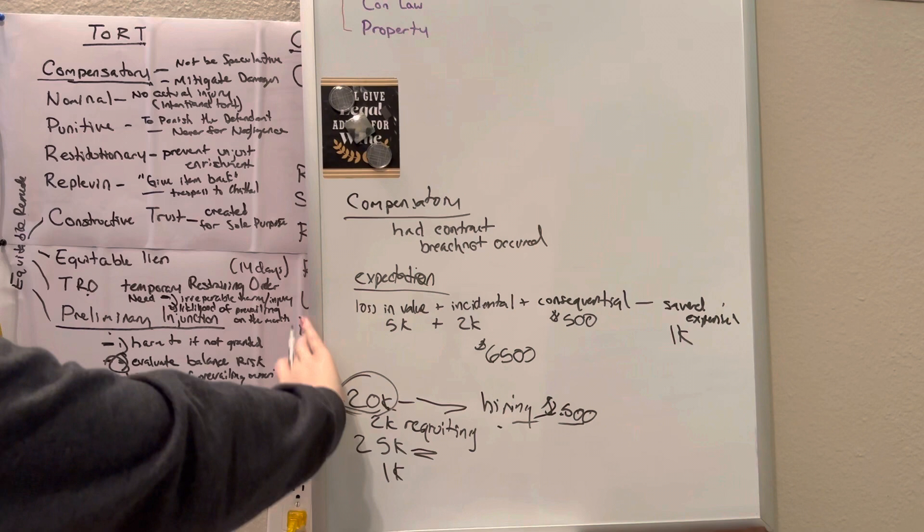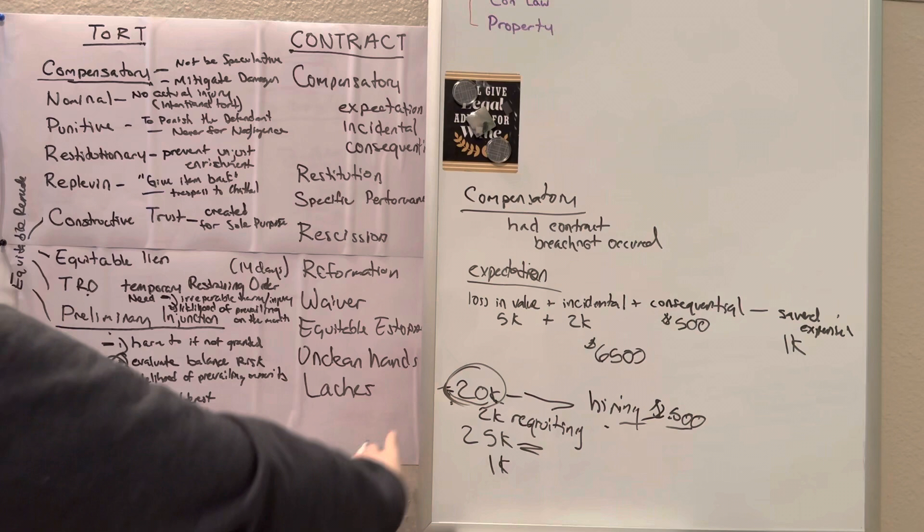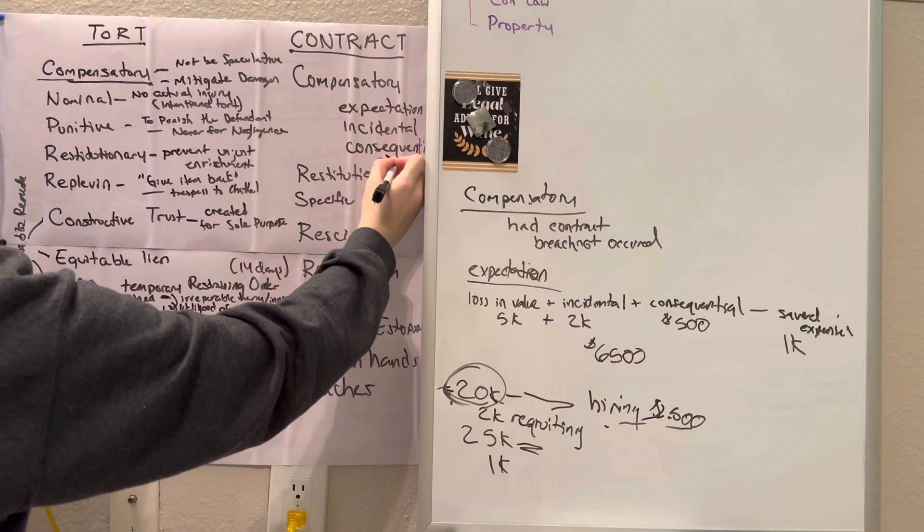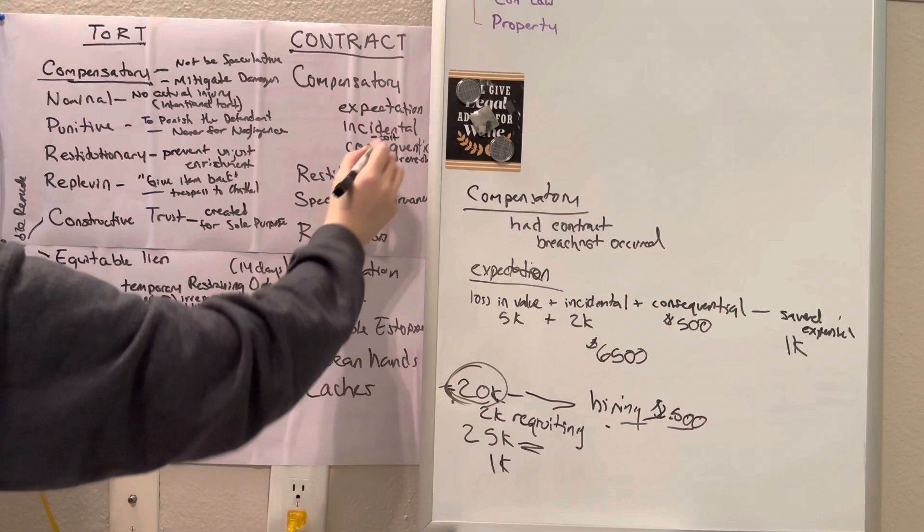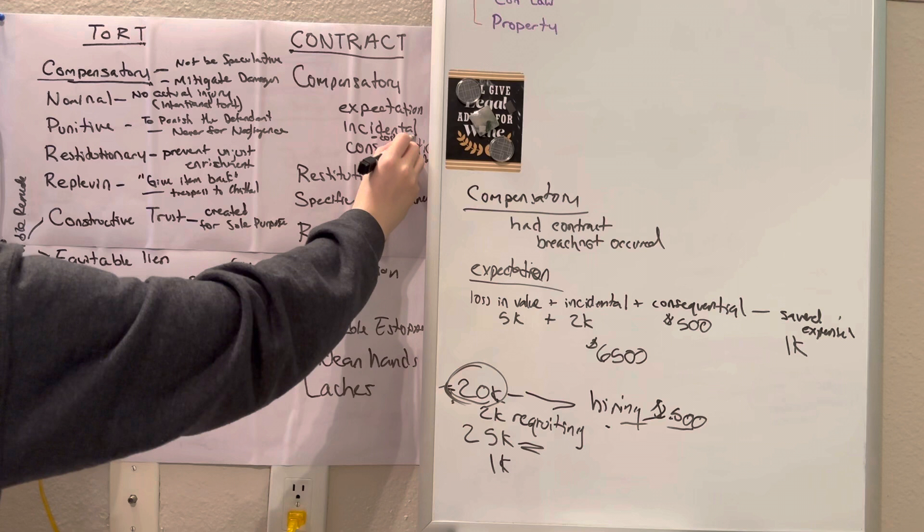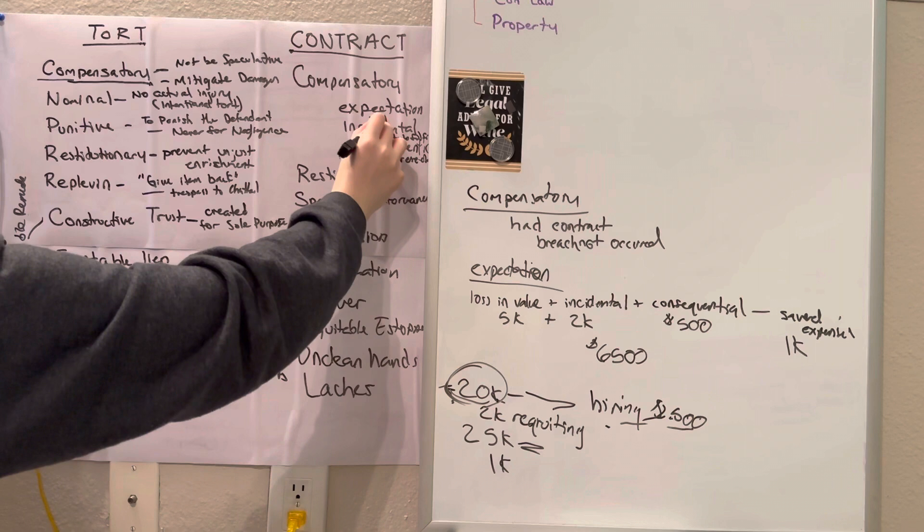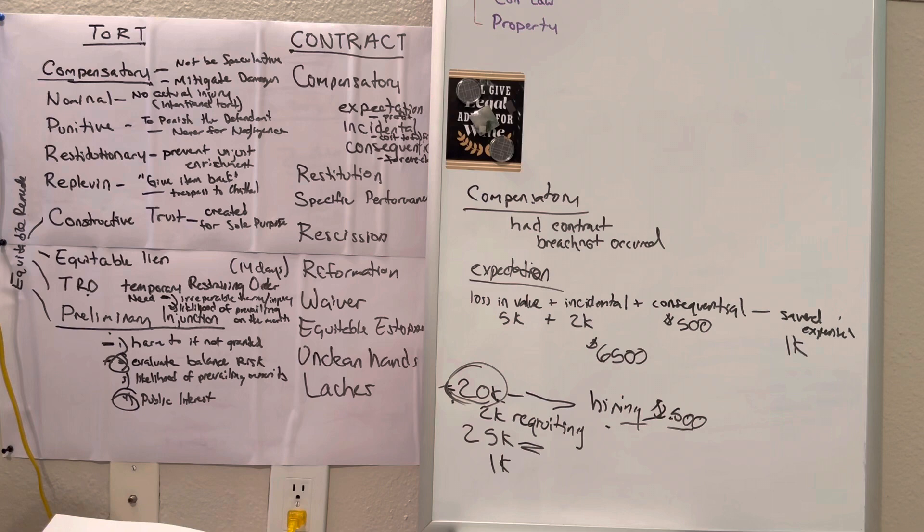The rule with consequential damages is that they have to be foreseeable; they can't be speculative. Incidental damages are costs incurred trying to prevent the breach, like hiring someone new or ordering the product from another company. Your expectation is the profit you hoped to gain from the contract.